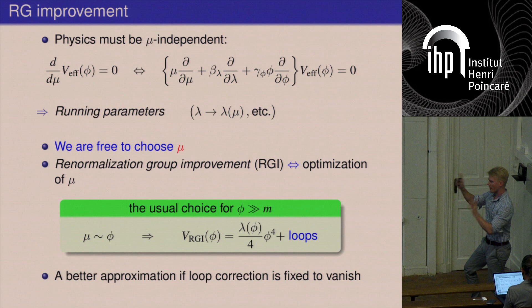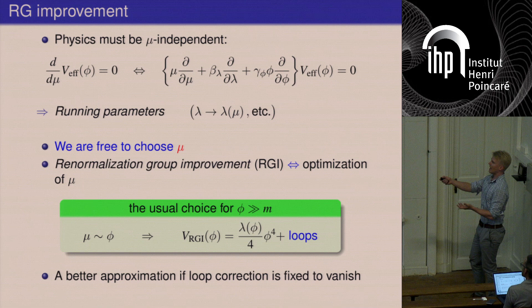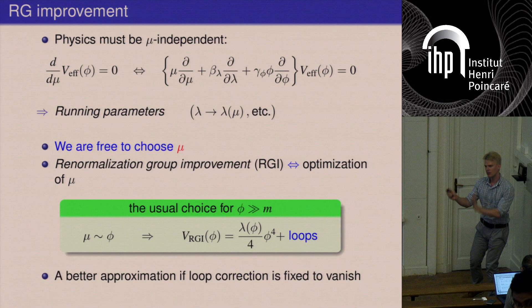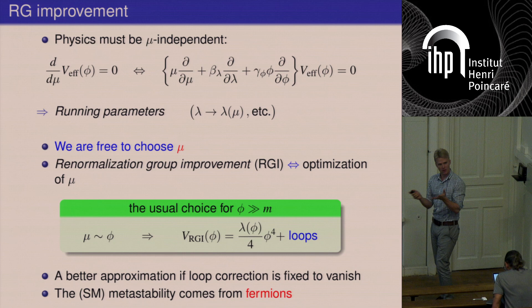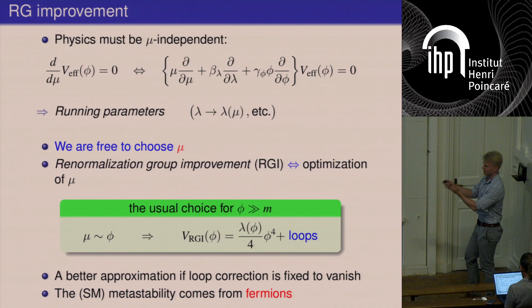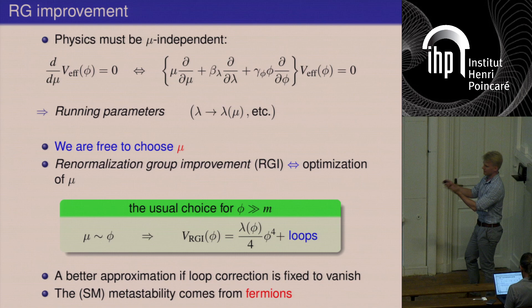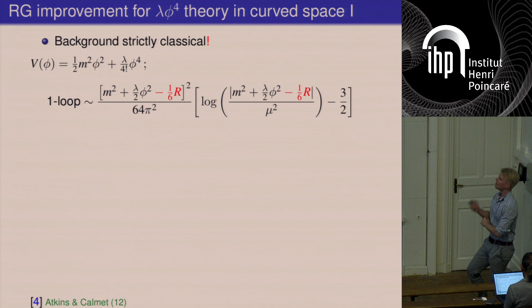Moving now to a curved background. We have the same theory but relax the assumption of a flat background — the background can be curved in any way, not only FRW. The one-loop correction on a curved background looks very much like the Coleman-Weinberg result but now the scalar curvature of gravity plays a role. This brings a crucial difference: from the loop correction you generate a term mixing the scalar curvature of gravity and the Higgs — the non-minimal coupling ξRφ², which should be present from the very start.